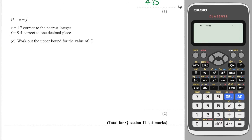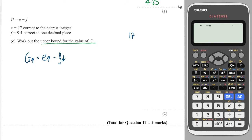Now we've been asked to work out the upper bound of G. So we write G upper, and that will equal — I want E to be as big as possible, but because I'm taking F away, I want that to be as small as possible. I want to take away as little as possible to make my overall value large. So let's look at E first. E is 17. The nearest integer would be 18 up and 16 down. I'm looking for the upper bound, so I'm going in between these two, so that is 17.5.